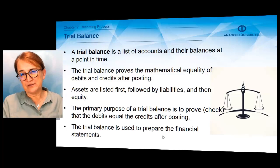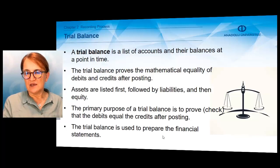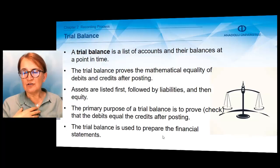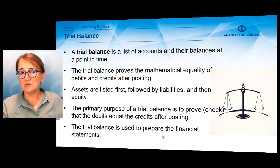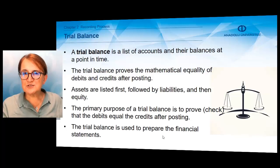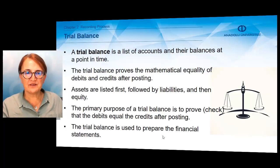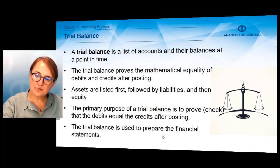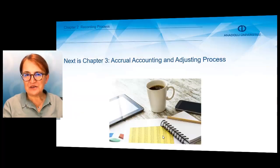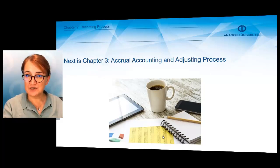During the period, you'll do the same things in the recording process. But at the end of the period, in order to prove the equality that debited amounts equal credited amounts, we have to prepare a trial balance. Trial balance is a list of accounts and their balances at a point in time — generally the ending date of the period. The trial balance proves the mathematical equality of debits and credits after posting, and its primary purpose is to prove that debits equal credits. Trial balance is also used to prepare financial statements. In Chapter 3, we'll learn actual accounting and the adjusting process.